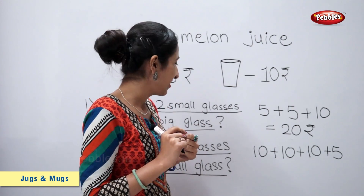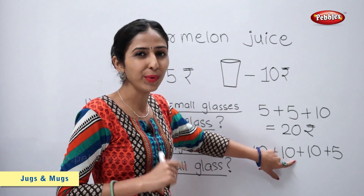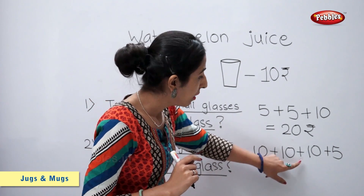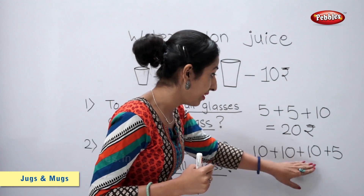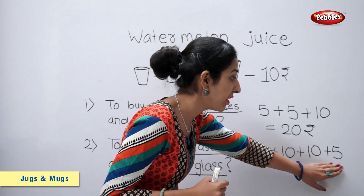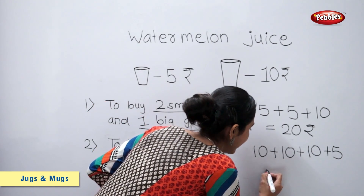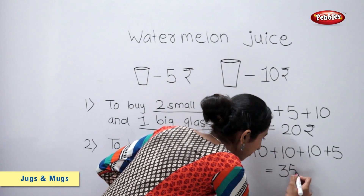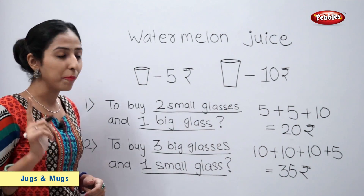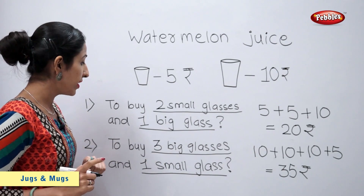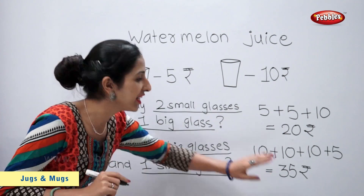Let's count. 10 plus 10 is equal to 20. 20 plus 10 is equal to 30. 30 plus 5 is equal to 35. So, for buying 3 big glasses and 1 small glass, we will have to pay 35 rupees.